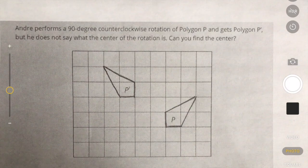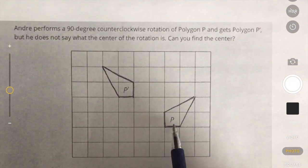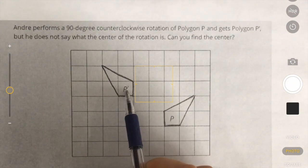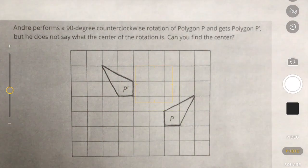Andre performs a 90 degree counterclockwise rotation of polygon P, and gets polygon P prime. But he does not say what the center of rotation is. Can you find the center?